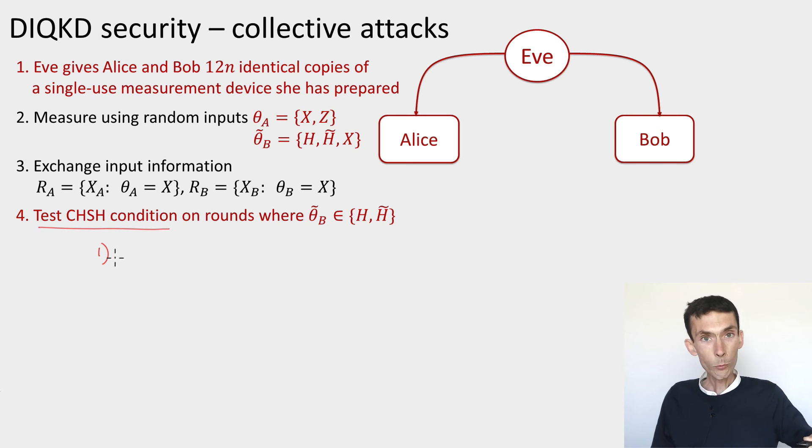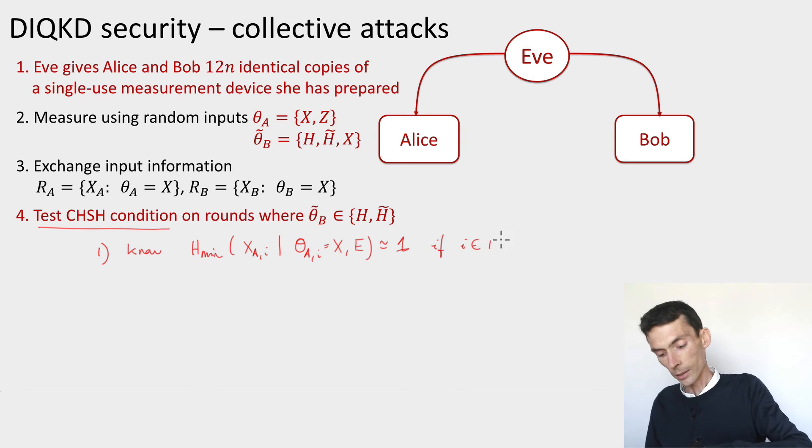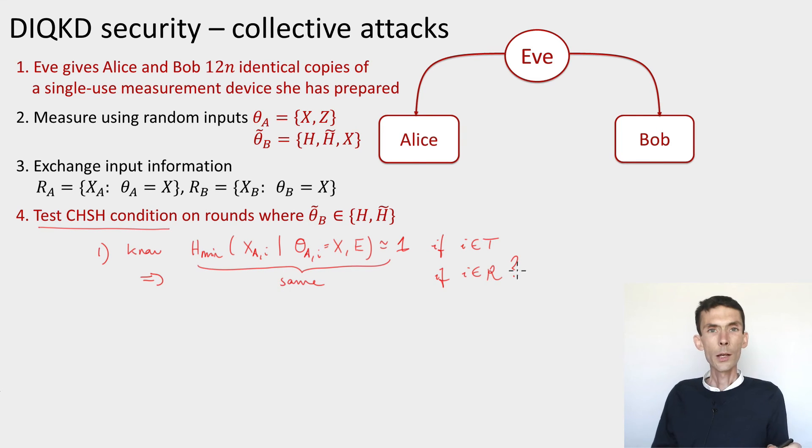What we did is that our test of the CHSH condition let us conclude this assumption for a single round. We can characterize the behavior of the device when we use it once. Then there's two steps we need. We know the min entropy of the bit that's output by Alice, conditioned on basis being equal to x and the side information e. This is roughly equal to 1, it's close to 1 if i is a test round. We want to conclude something about the rounds that are used for the raw key, which are the other rounds. This is based on using concentration bounds and the fact that we choose the test rounds at random.